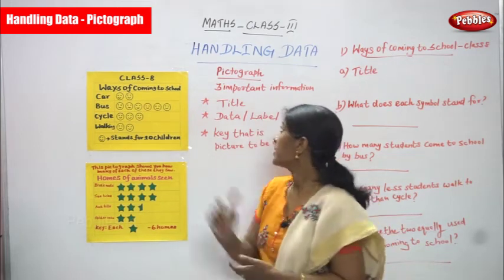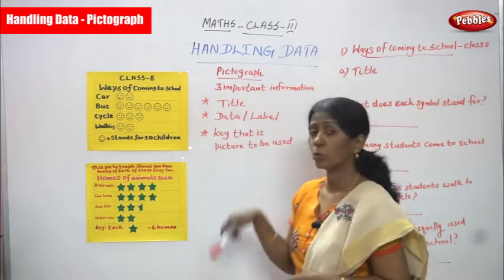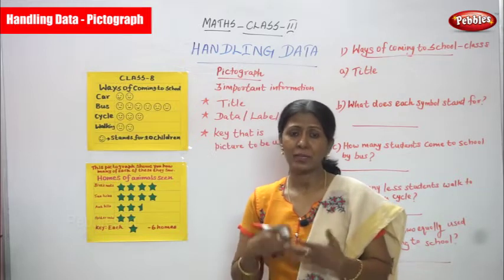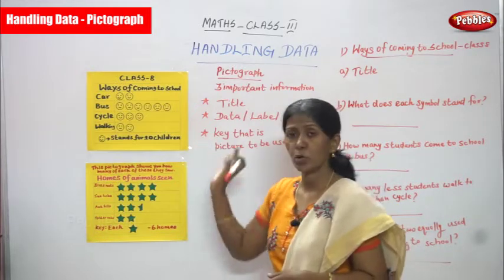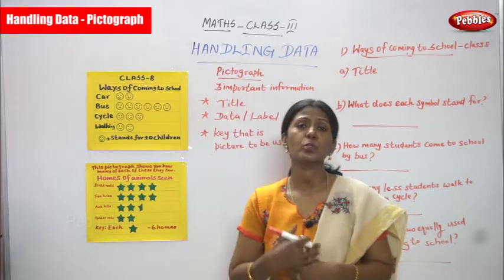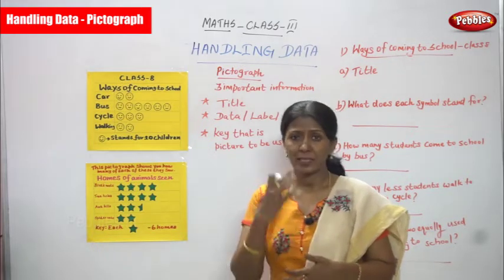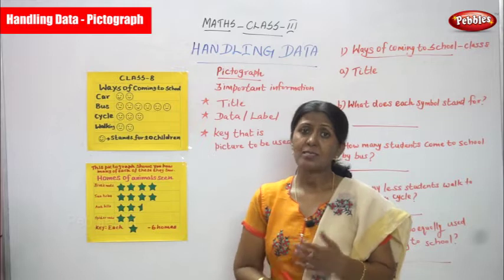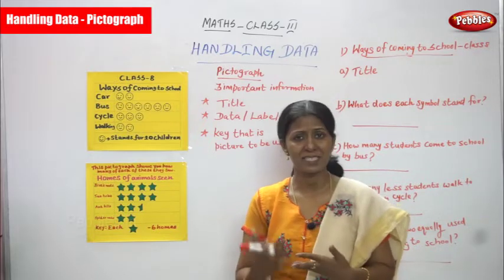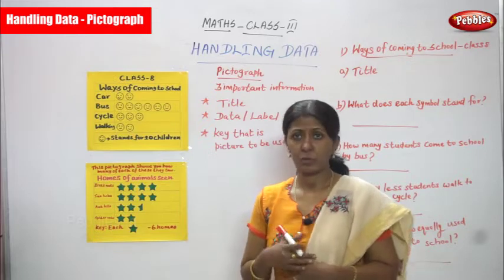Now we are going to see pictograph. Pictograph means it represents symbols and also pictures. Whatever information you gather and collect, that information is represented through pictures and symbols — it is called pictorial representation. Otherwise we can call it a pictograph.